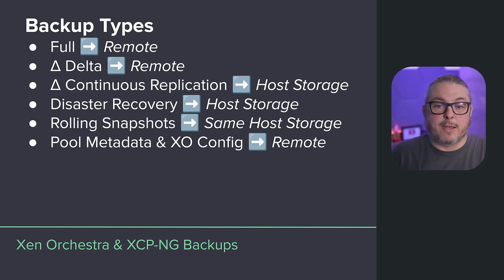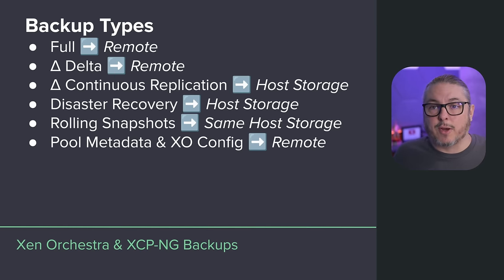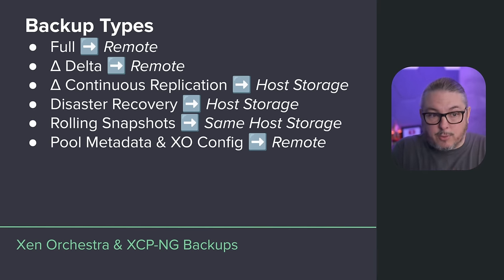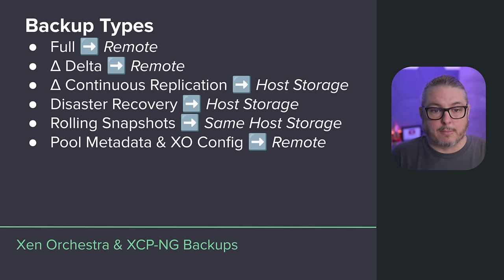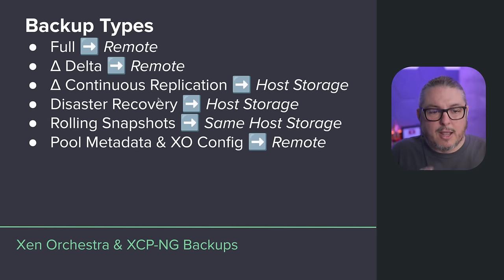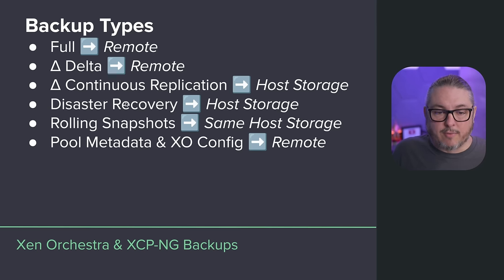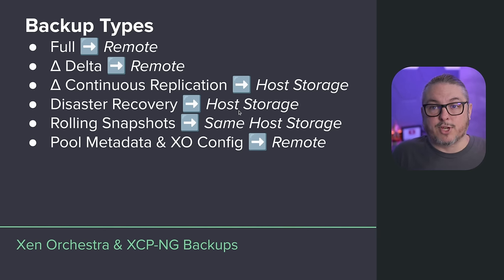Continuous replication is a really cool disaster recovery feature where you're continuously replicating the VM onto another host, which can even be in a different pool. If the main host dies, you can instantly start that VM based on the last replication run. The first sync is large, but afterwards it's incremental — only syncing the deltas. Disaster Recovery backup type is more like a full backup, copying the entire virtual machine to another host's storage.